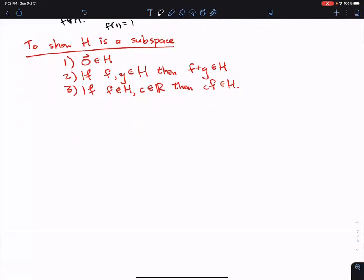So let's start with bullet point one. How do we show that the zero vector is in H? Well, what is, in this case, what is the zero vector? Well, it's the function with the property that when I add it to any other function, it doesn't change the thing I'm adding it to.